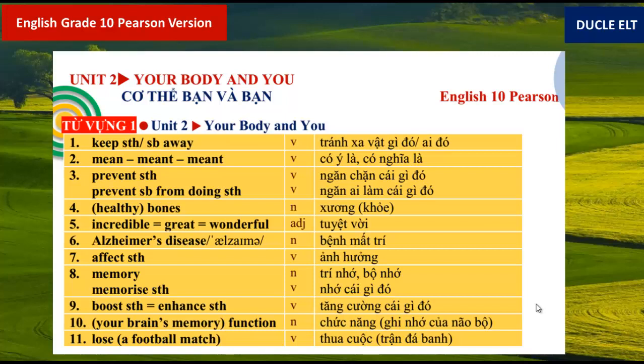Okay now, the whole section again. 1. Keep something away, keep somebody away. 2. Mint. 3. Prevent something, prevent somebody from doing something. 4. Healthy bones. 5. Incredible, great, wonderful. 6. Alzheimer's disease. 7. Affects something. 8. Memory, memorize something. 9. Boost something, enhance something. 10. Your brain's memory function. 11. Lose the foot bone match. Okay now, we move to the next page.